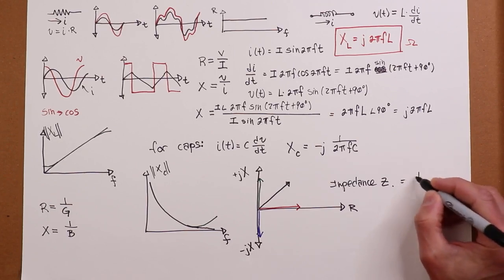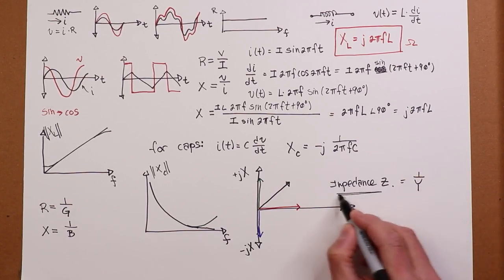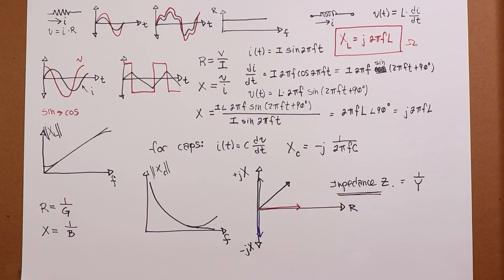What's the flip of impedance Z? It's called admittance Y. So, Z is equal to 1 over Y. All right. So, we're going to pick up talking about impedance in the next video.